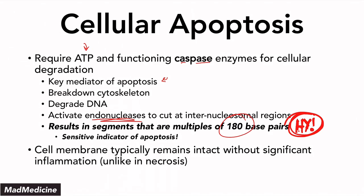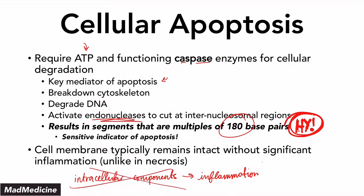The cellular membrane is actually not damaged — that's very important. When cellular membrane damage occurs, intracellular components are going to be leaked out, and that leakage leads to inflammation, as you can see in necrosis. But because apoptosis is a small-scale event and the cell membrane remains intact, you are going to see no leakage of intracellular components and no inflammation occurring. That is very important.